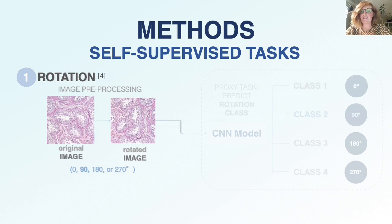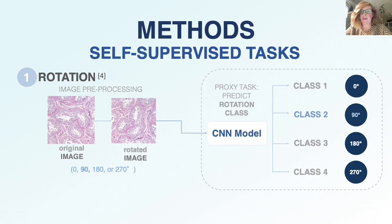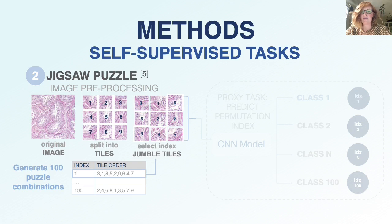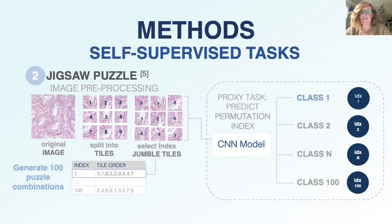For the rotation self-supervised task, the original image was rotated by one of four classes: 0, 90, 180, or 270 degrees. The model was then tasked with picking the correct rotation class. For the jigsaw puzzle task, 100 unique puzzle combinations were generated. The original image was then split into nine evenly sized tiles in a 3x3 grid. These tiles were then shuffled according to the 100 predetermined jigsaw patterns. Each tile was randomly cropped, normalized, and color channels were jittered to prevent the network from discovering trivial solutions. The model was then tasked with predicting the index that contains the correct tile order to successfully solve the jigsaw puzzle.